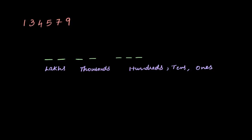So this is what we want when we say we want to read: how many lakhs, how many thousands, how many hundreds, tens, and ones. So then we look at this number and we decide: this is the ones place, this is the tens place, this is the hundreds place, and this is my thousands place — I'm going to put 'th'.